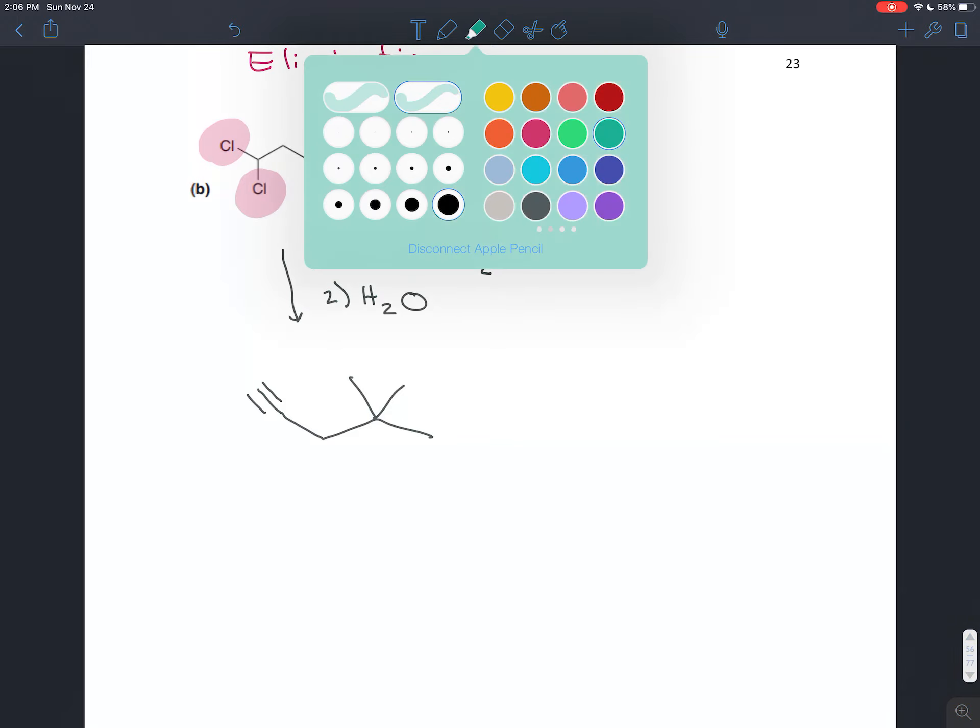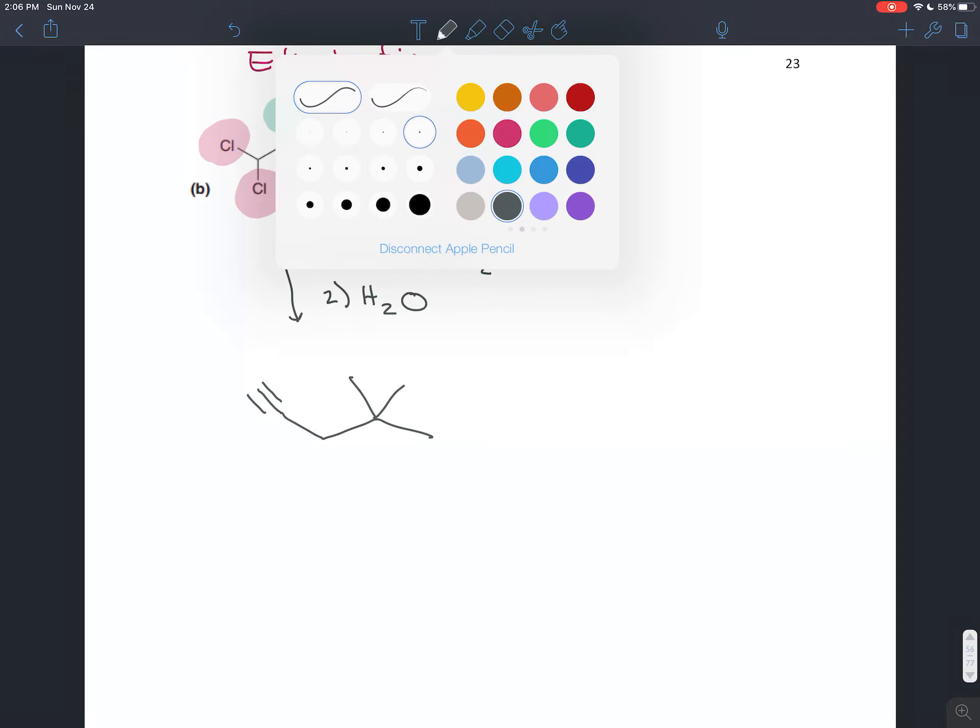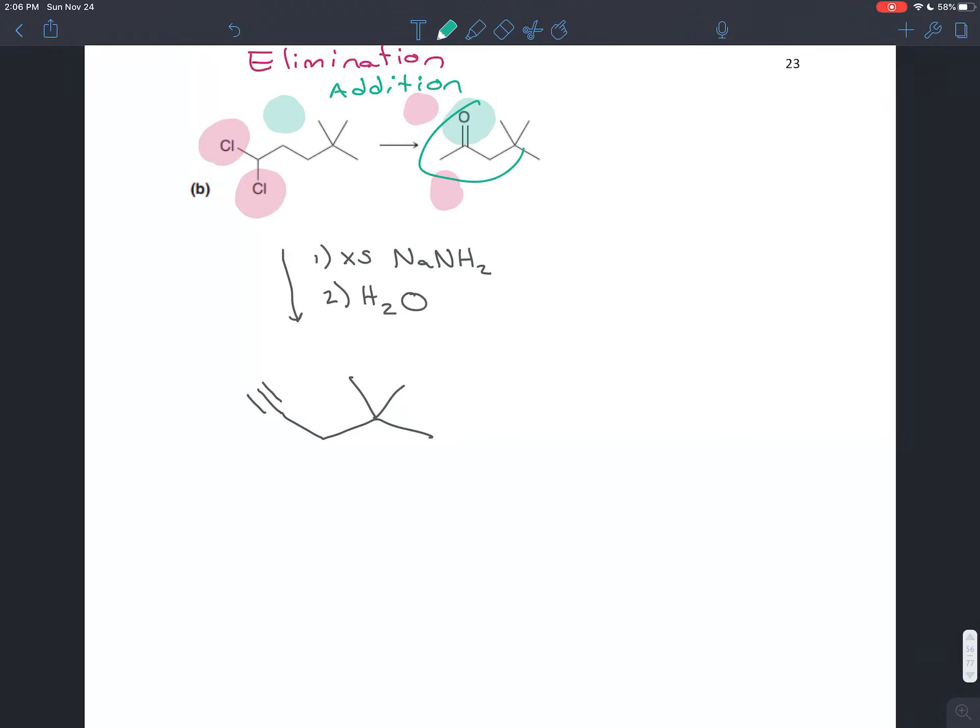What else changes? We see an oxygen in the product that's not in the reactant. We have to add that on—an addition reaction. We're adding oxygen to get a ketone. How can you make a ketone? You can make it from an alkyne by doing hydration.